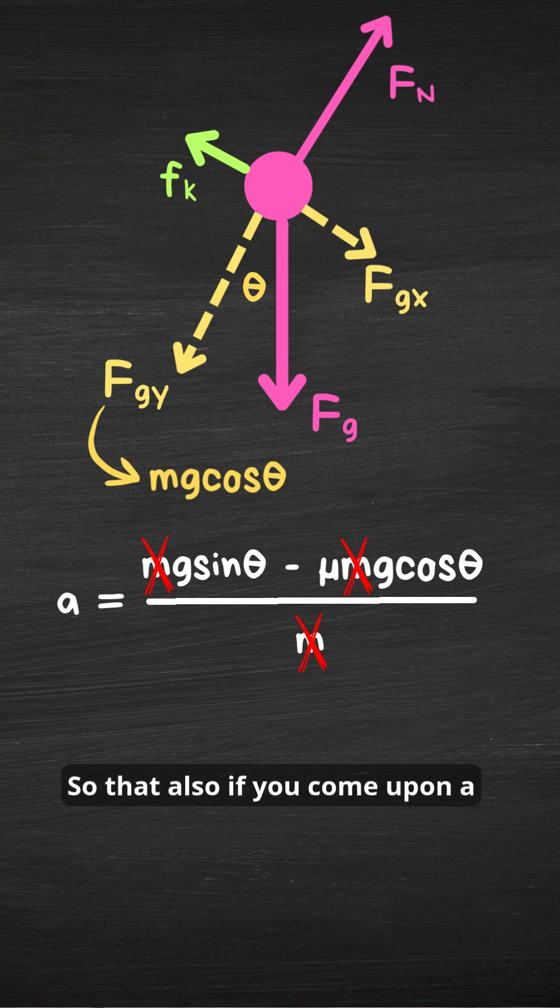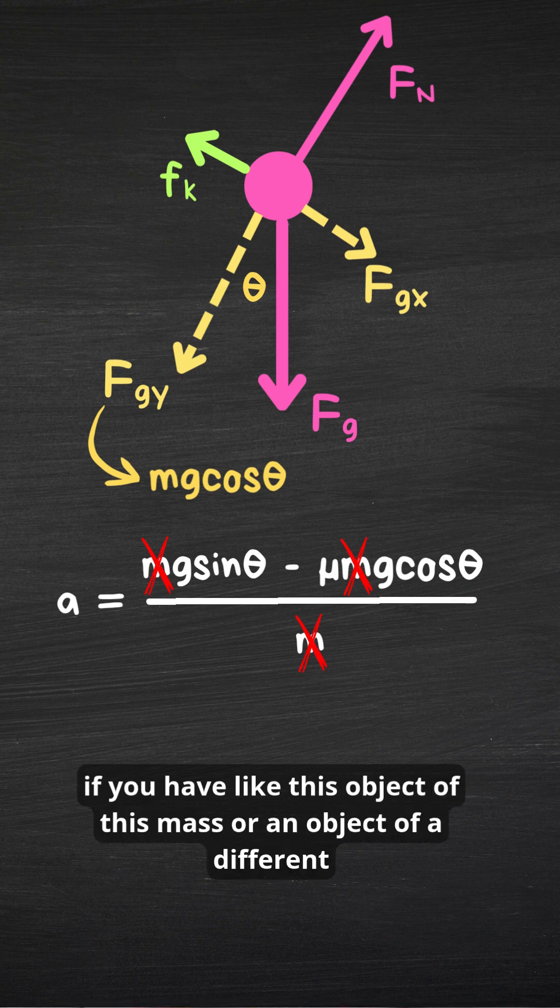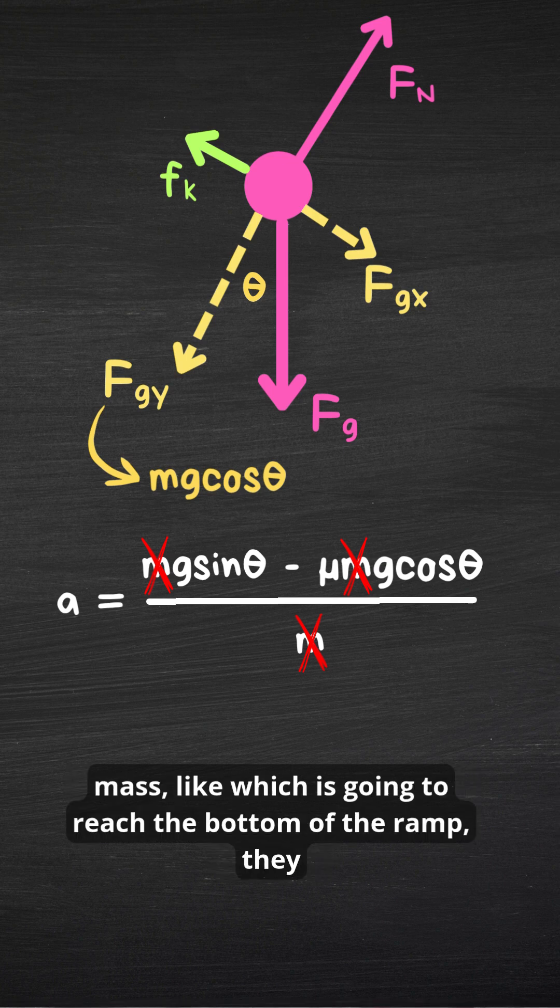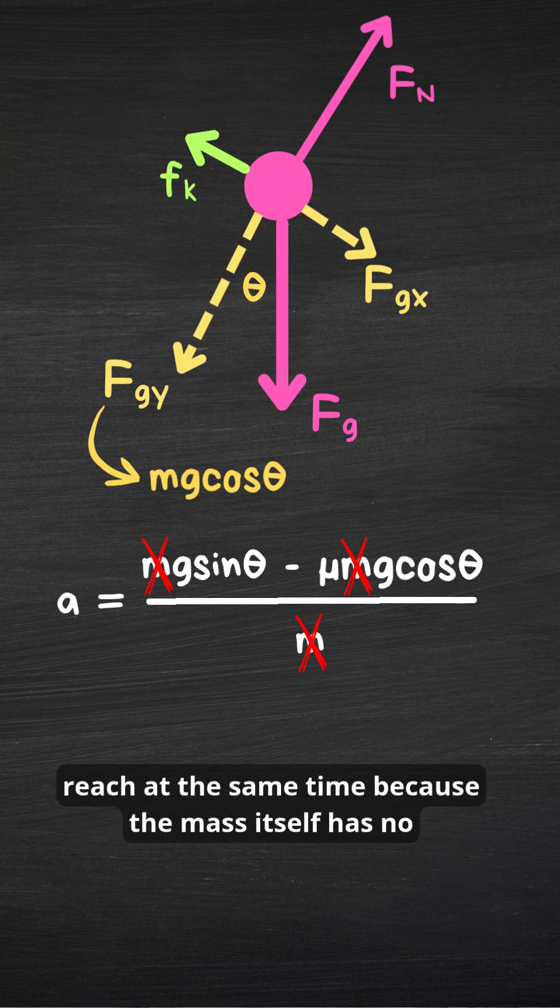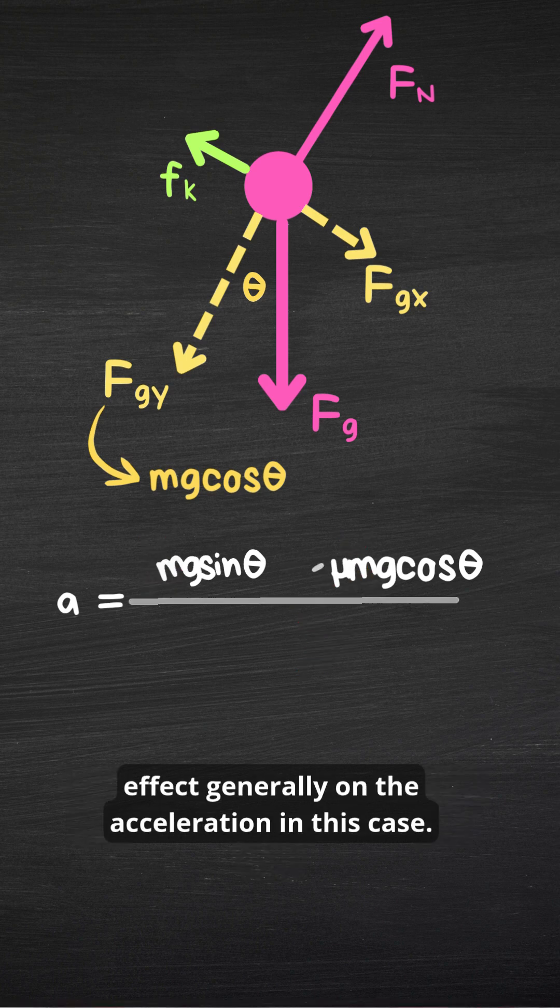So that also, if you come upon a conceptual question where you have this object of this mass or an object of a different mass, which is going to reach the bottom of the ramp, they would reach at the same time because the mass itself has no effect generally on the acceleration in this case.